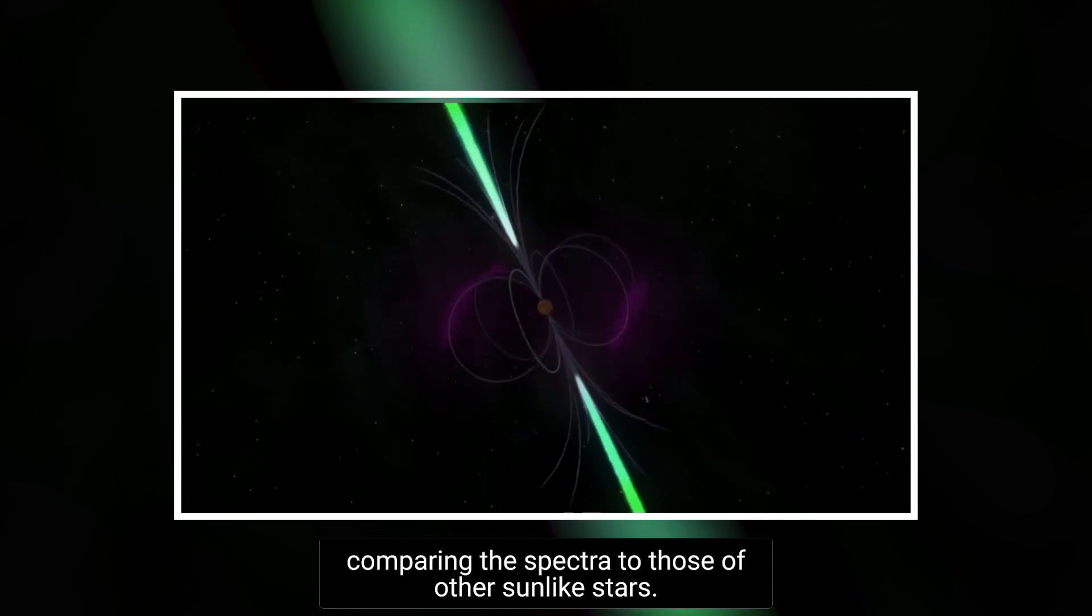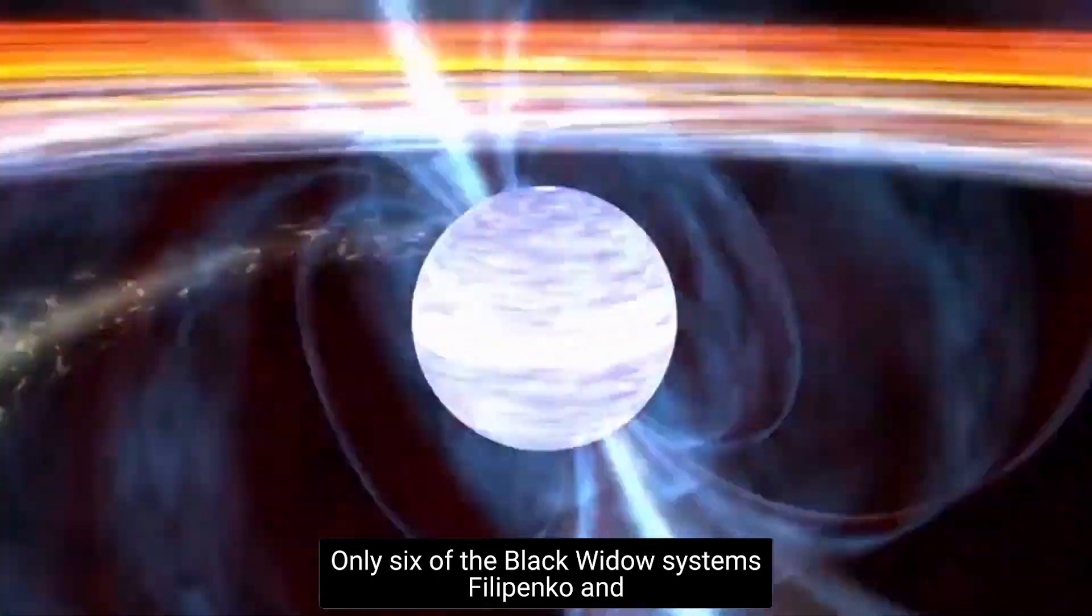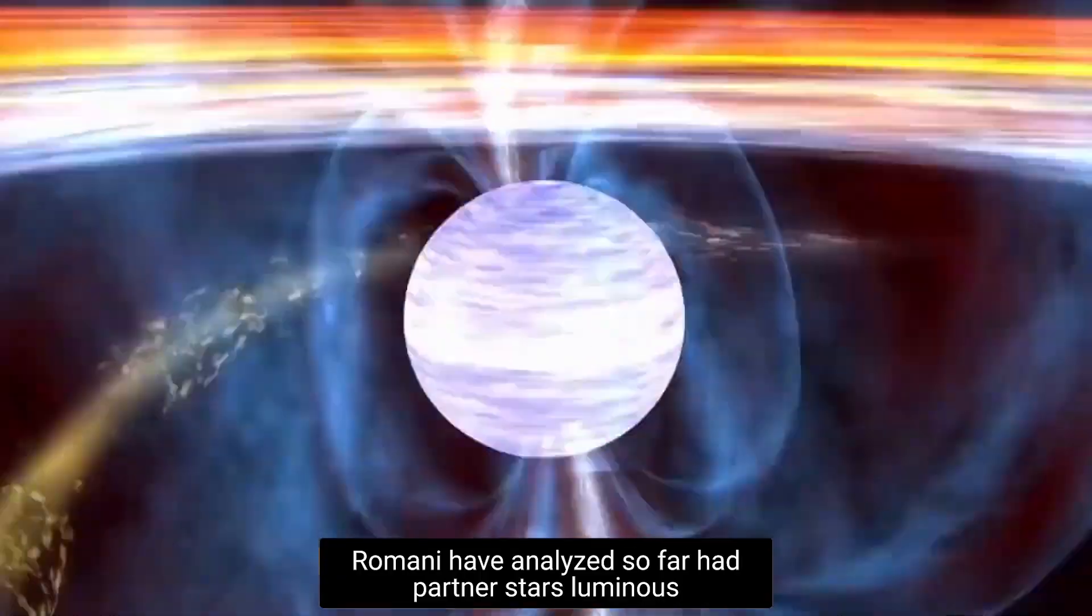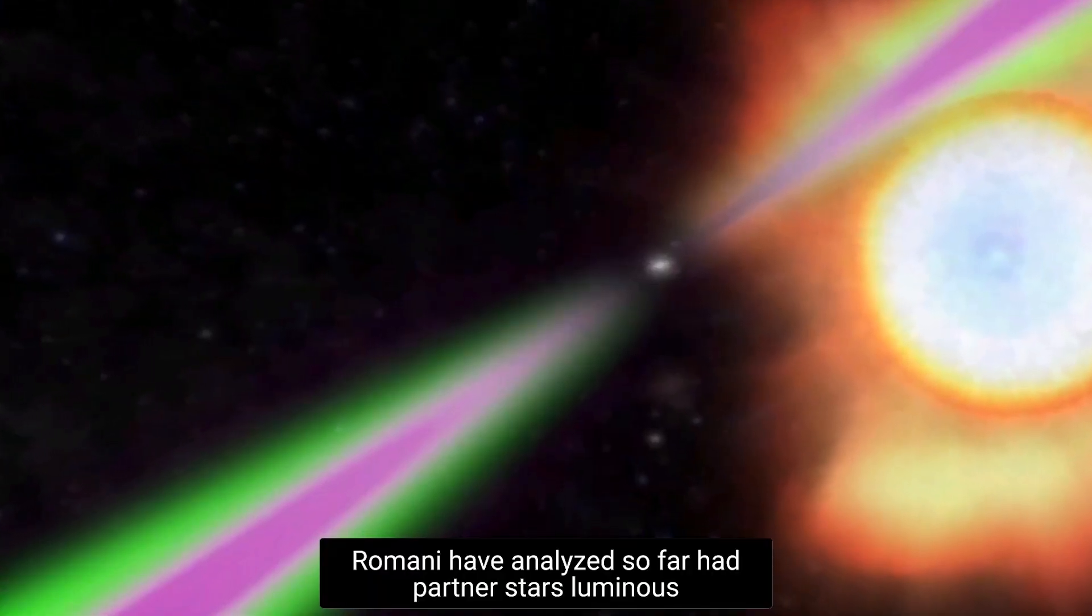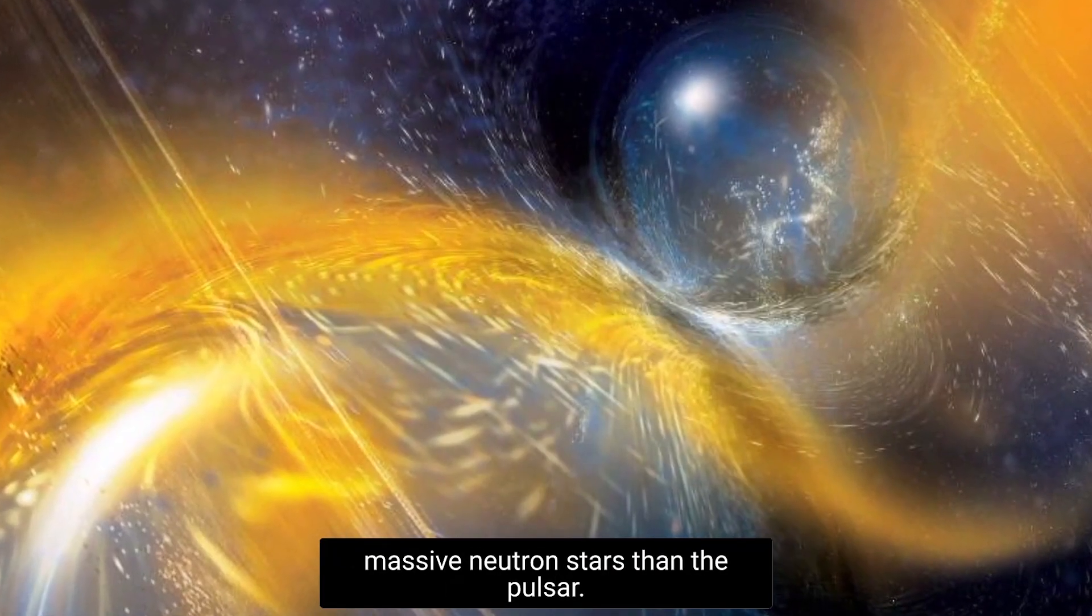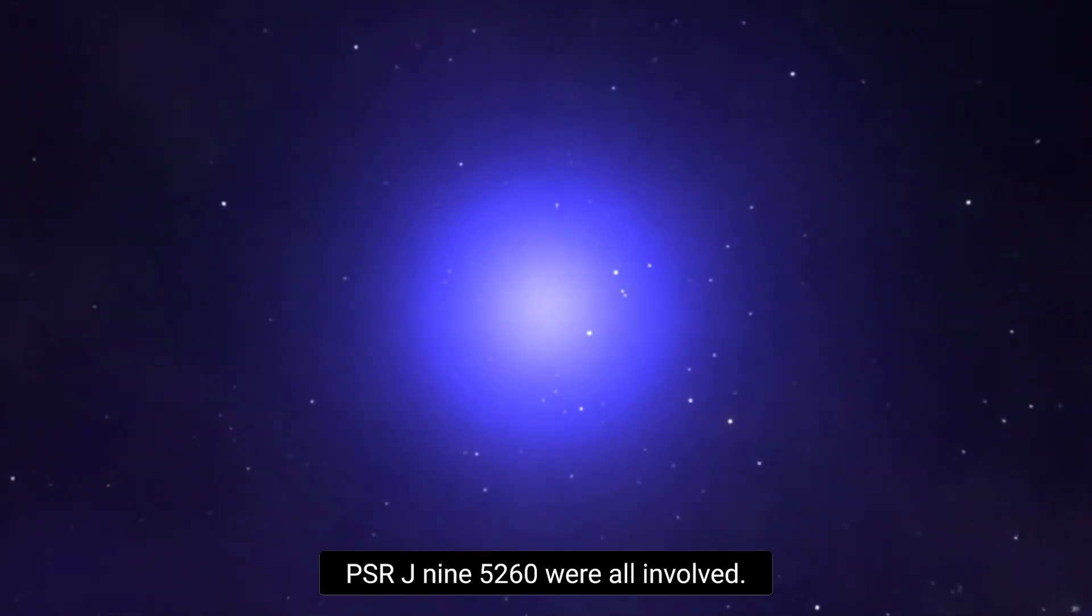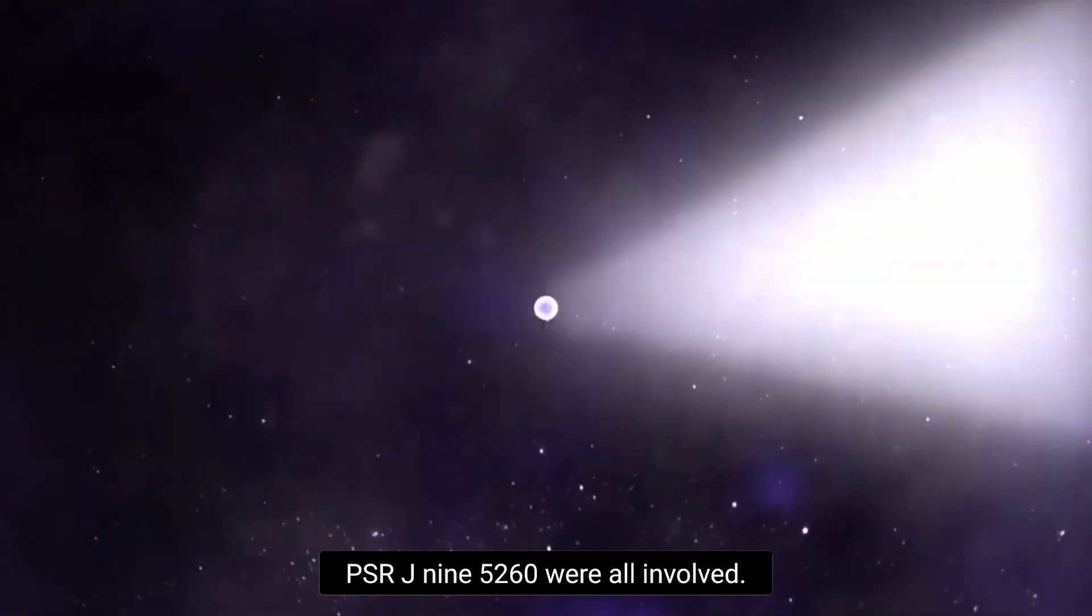Over the course of the last four years, Filippenko and Romani turned the Keck I telescope on PSR J0952-0607 six times. Each time using the low-resolution imaging spectrometer to observe at 15-minute intervals to catch the dim companion at certain times in its 6.4 hour orbit around the pulsar, they were able to determine the mass of the neutron star and gauge the orbital velocity of the companion star by comparing the spectra to those of other sun-like stars. Only six of the black widow systems Filippenko and Romani have analyzed so far had partner stars luminous enough to allow them to determine a mass. Less massive neutron stars than the pulsar PSR J0952-0607 were all involved.